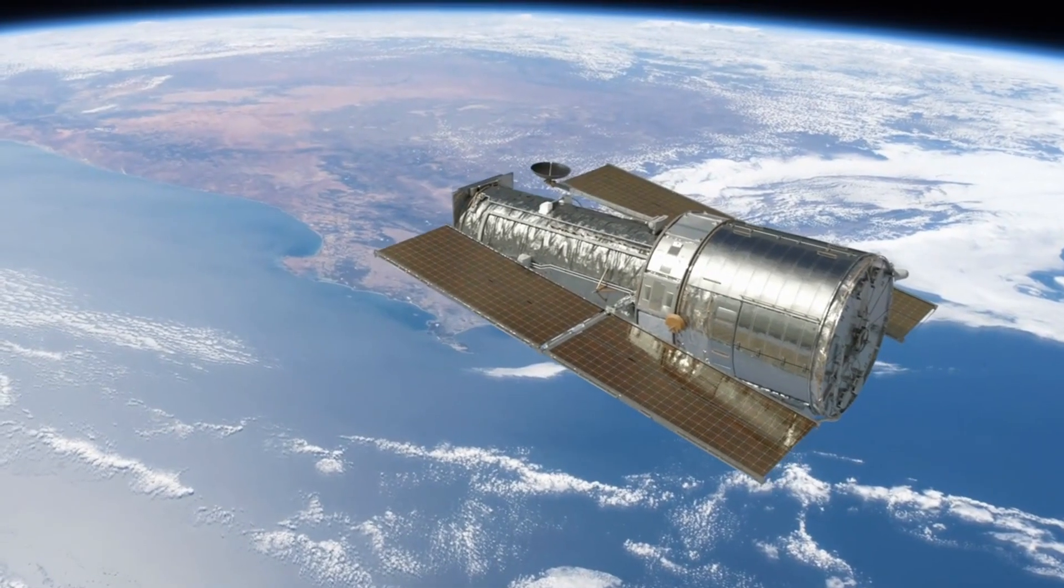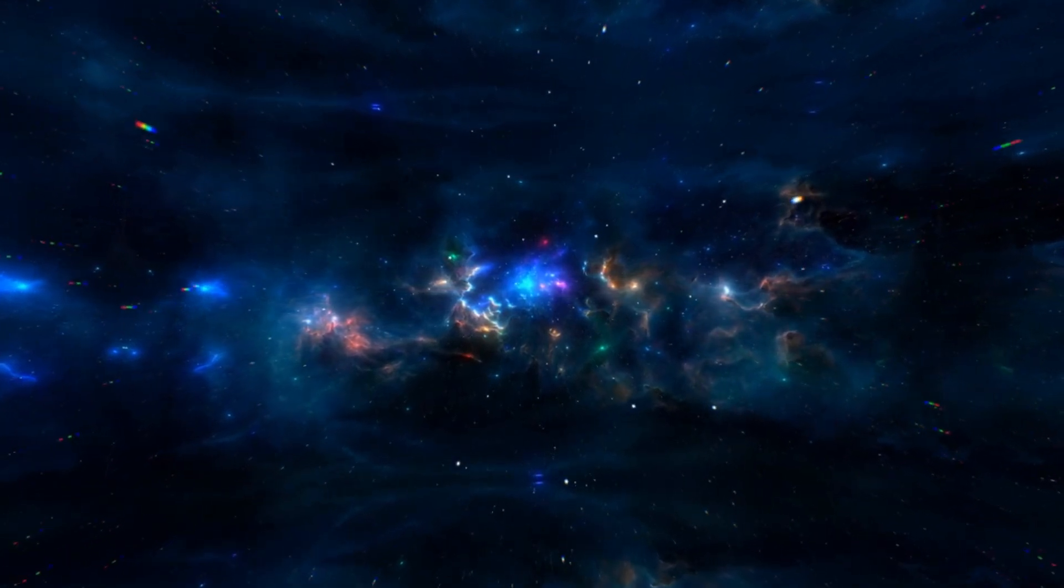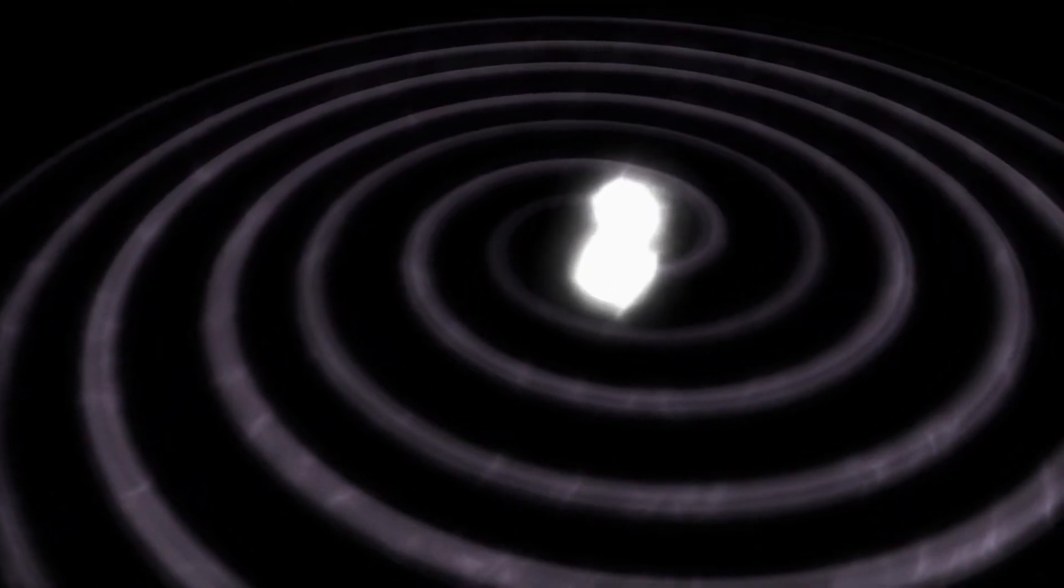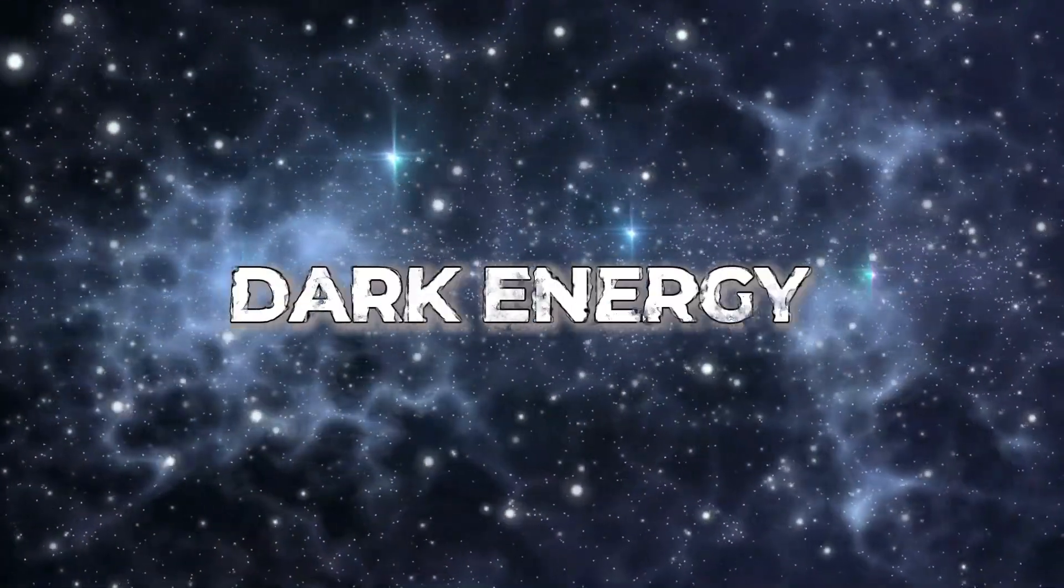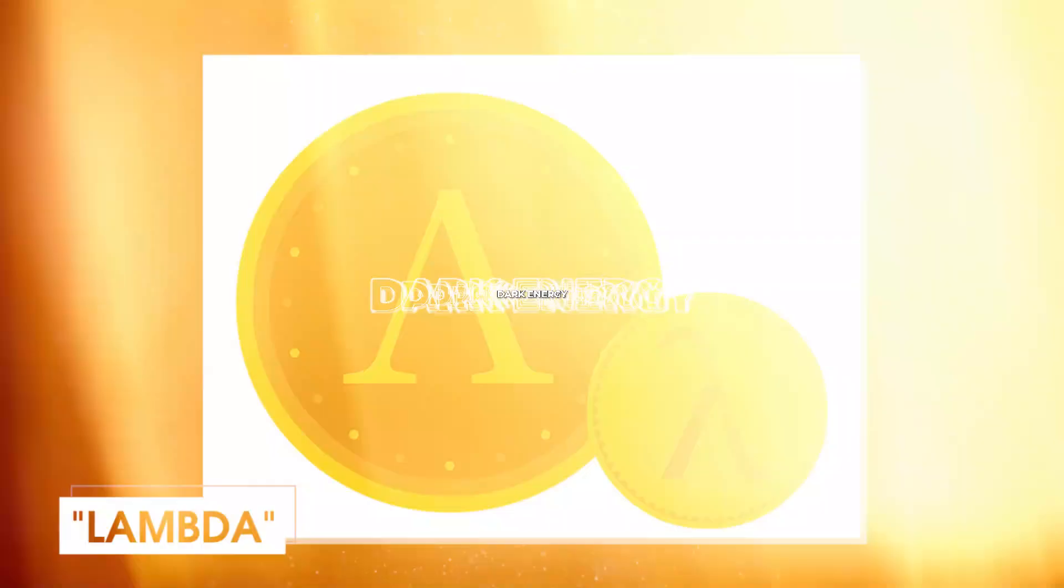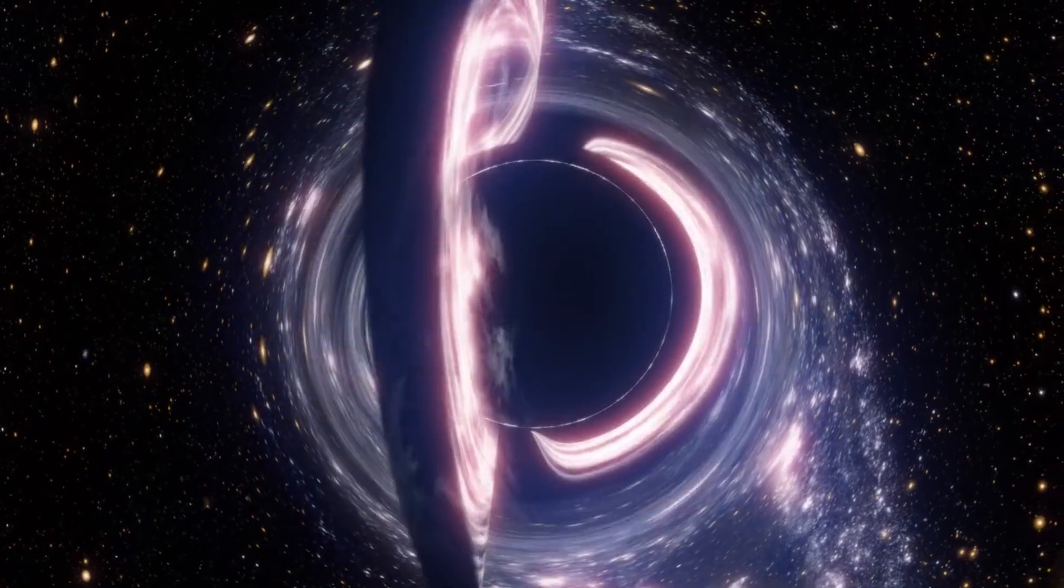Observations by the Hubble Telescope indicate that the loaf expands more rapidly than anticipated, with galaxies separating at high velocities. This acceleration stems from dark energy, denoted by the Greek letter lambda, acting as a repulsive force in space.